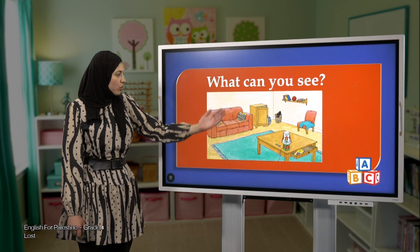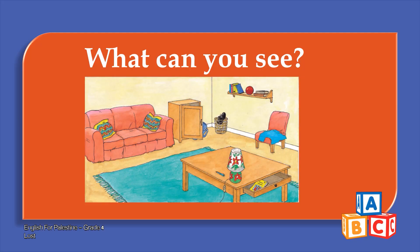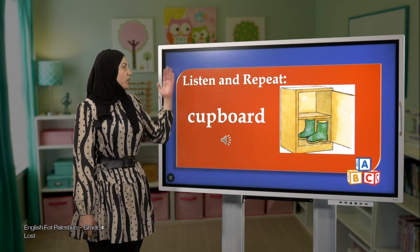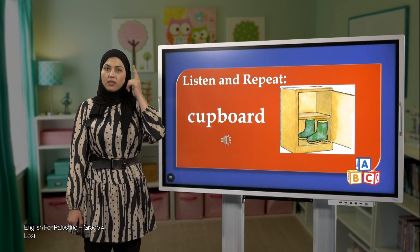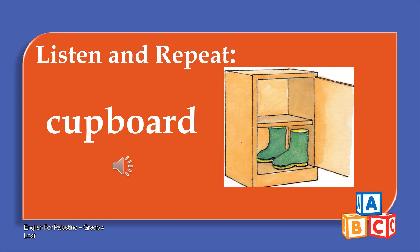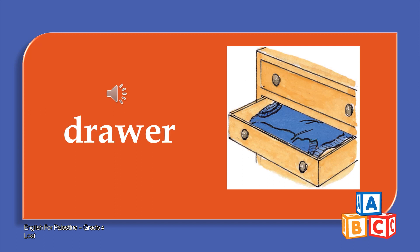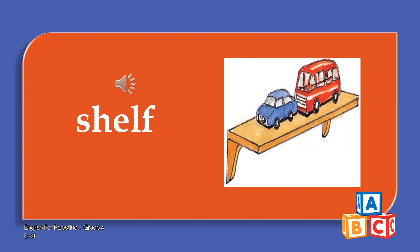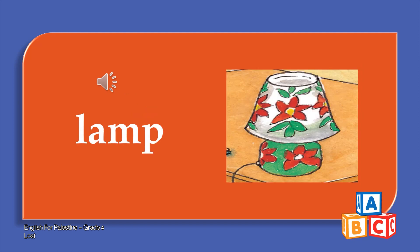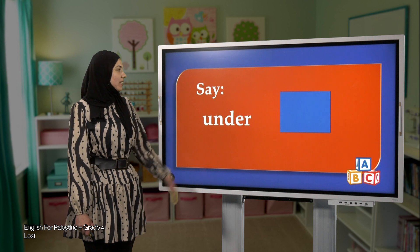What can you see? Look at this picture. Yes, I can see a chair. Good. What else? I can see a table. Good. I can see a box. Good. Now let's listen and repeat: cupboard, bin, drawer, shelf, lamp.